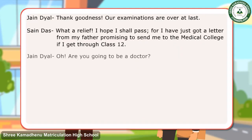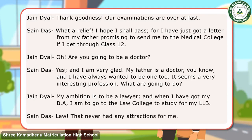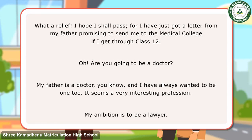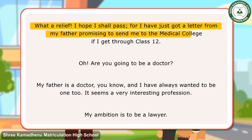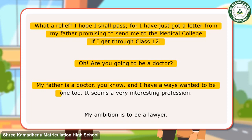In the dialogues, the friends have used indefinite articles A or AN with nouns. Here are some examples of sentences with indefinite articles A, AN, and one: What a relief! I hope I shall pass, for I have just got a letter from my father promising to send me to the medical college if I get through class 12. Are you going to be a doctor? My father is a doctor, you know, and I have always wanted to be one too. It seems a very interesting profession. My ambition is to be a lawyer.